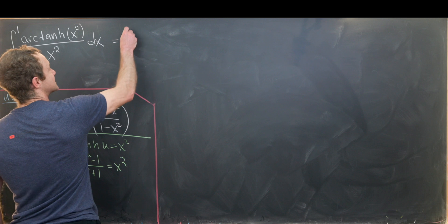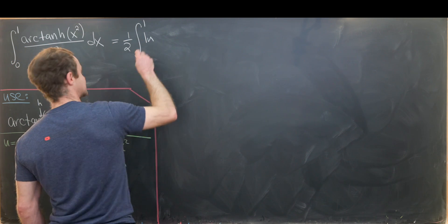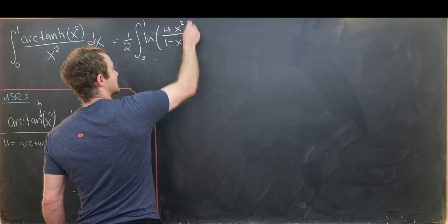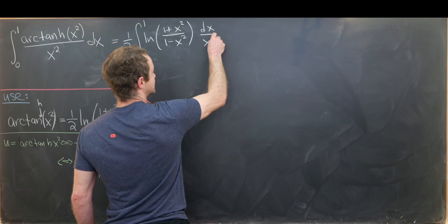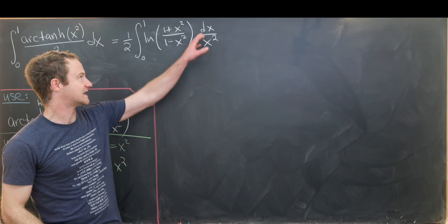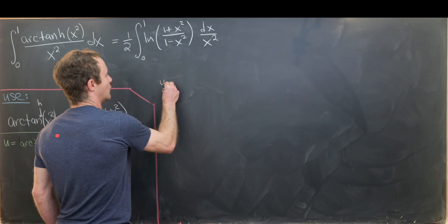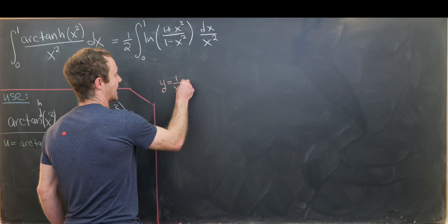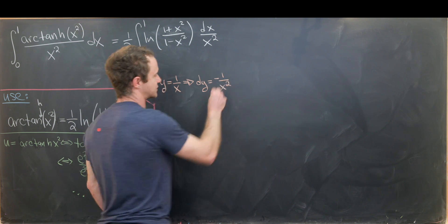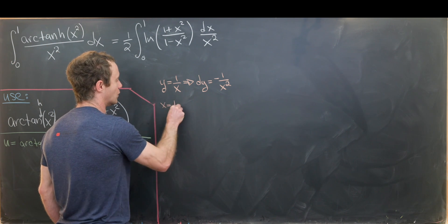So we rewrite the integral as one half times the integral from 0 to 1 of the natural log of (1 + x²)/(1 − x²), times dx over x². We write it as dx over x² to motivate a change of variables. Let's let y equal 1 over x.